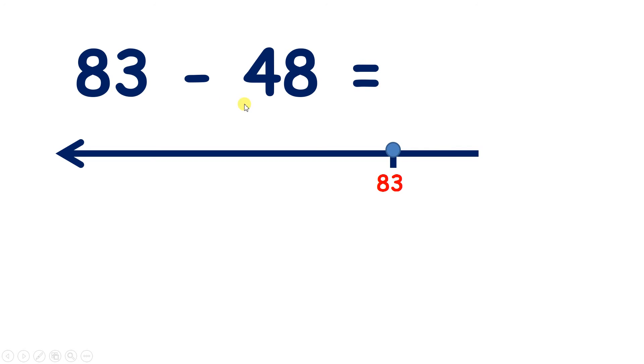How could we subtract 48? 48 is 2 less than 50, so we can subtract 50, then add 2.